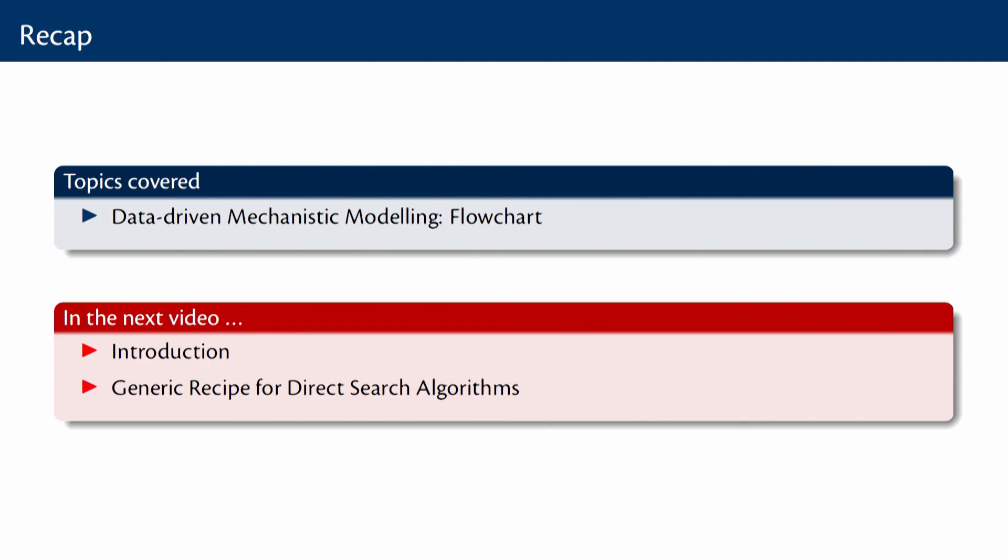So I hope in this video you got a good overview of how we go about mechanistic modeling given data and what are all the possible steps involved and how would you try and discriminate between good models and so on. In the next video, we will start looking at an introduction to stochastic search algorithms or direct search algorithms and particularly discuss what is the generic recipe underlying practically all direct search algorithms.